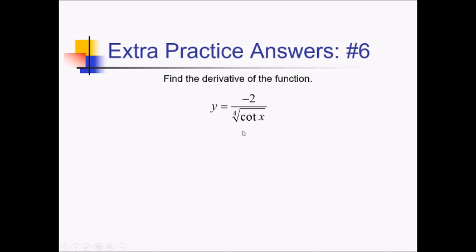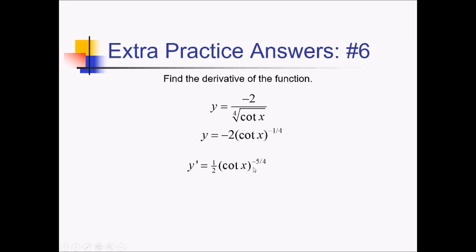To find the derivative of this crazy-looking function, I could use the quotient rule, but I think this is going to be easier if I just rewrite this with an exponent: negative 2 times cotan of x raised to the negative 1 over 4 power. That would give me a 1 over 4th root situation. Now let me just use the chain rule on this — essentially negative 2 times something to the negative 1 fourth. Using my power rule, 1 fourth and 2 multiplied together gives 1 half out in front, so 1 half cotan of x to the negative 5 fourths, times the inner derivative. Derivative of cotan is negative cosecant squared of x. No need to simplify, so this is it.